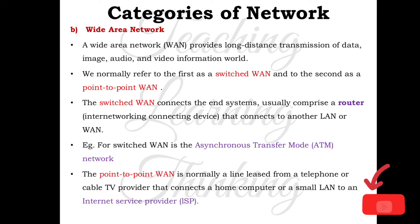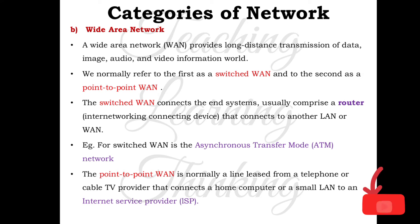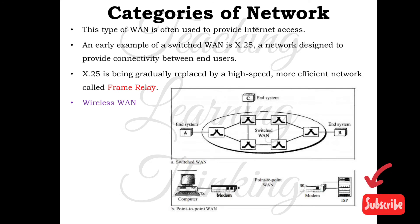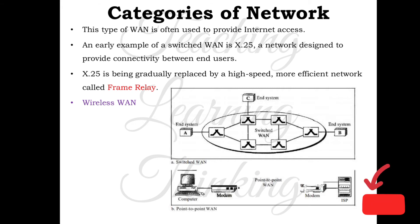An example of a switched WAN is the Asynchronous Transfer Mode (ATM) network. The point-to-point WAN normally uses a line leased from a telephone or cable TV provider to connect to an Internet Service Provider (ISP). This type of WAN is often used to provide internet access. An early example of a switched WAN is X.25, a network designed to provide connectivity between end users. X.25 is being gradually replaced by the higher-speed and more efficient Frame Relay network.